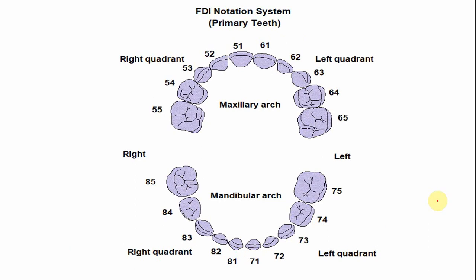In the FDI notation system, also known as the two-digit system, the first digit indicates the quadrant and the second digit indicates the tooth number. For example, 7 indicates the mandibular left quadrant, and 1 indicates the central incisor — so the number is 71. The digit 8 indicates the mandibular right quadrant, and 1 indicates the central incisor, so the deciduous right mandibular central incisor is numbered 81.